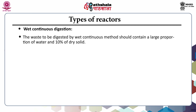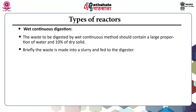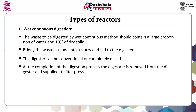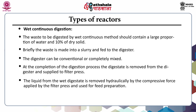The next type is wet continuous digestion. The waste to be digested should contain a large amount of water and less solid — almost 10%. The waste is made into a slurry and fed to the digester, which can be conventional or completely mixed. At the completion of digestion, the digestate is removed and supplied to a filter press for dewatering. The water arising from dewatering can be recirculated back to the digester.